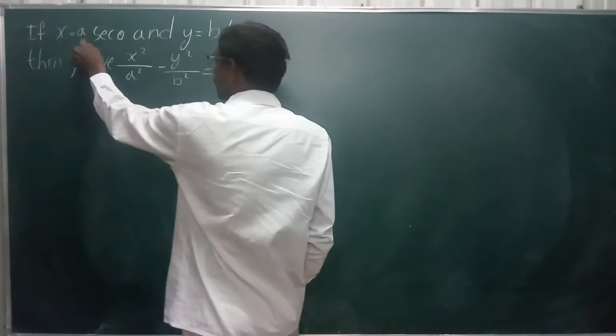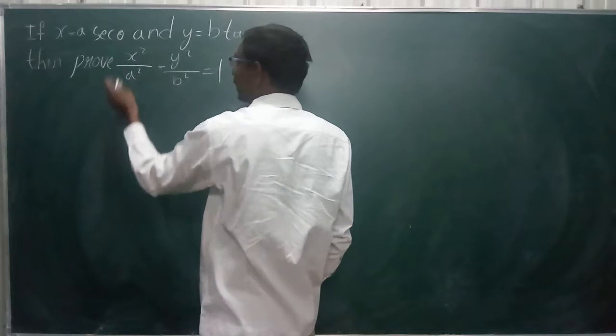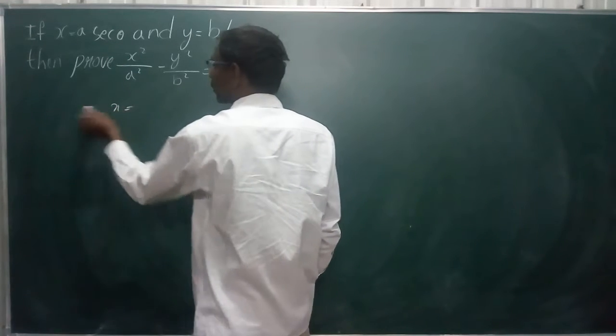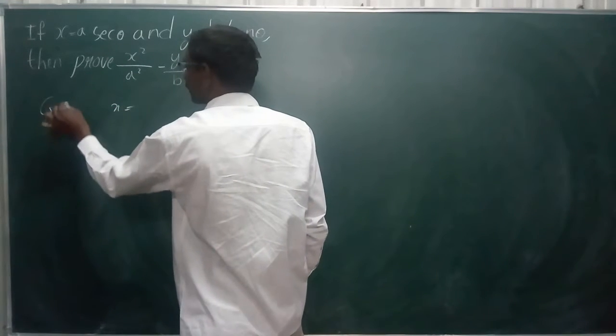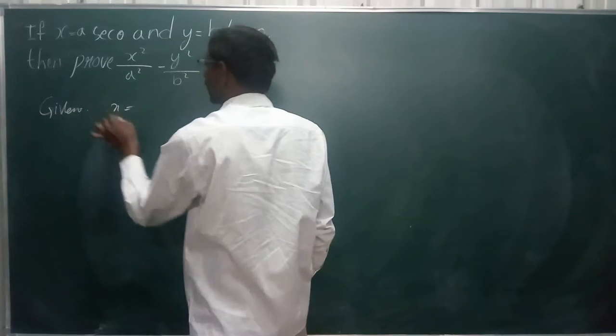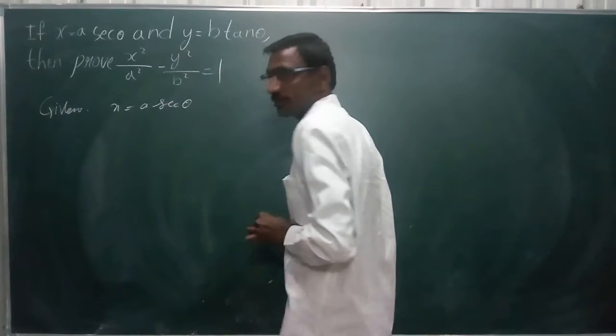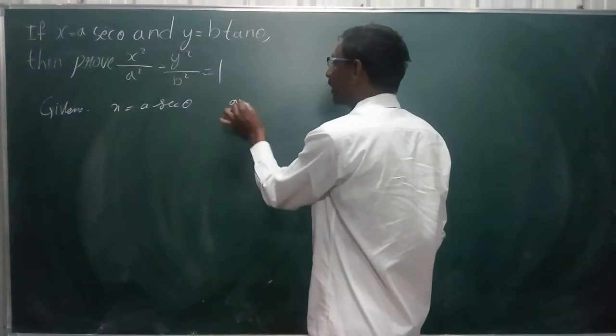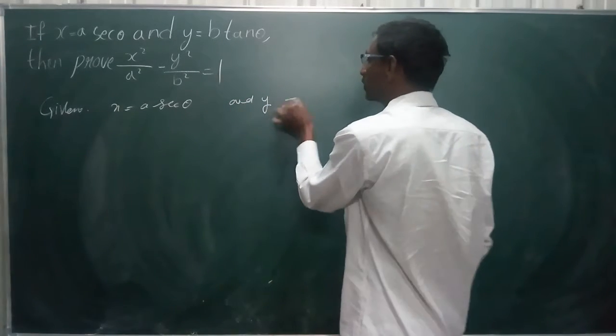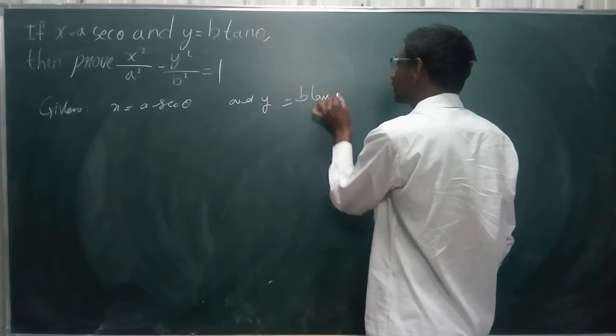Here given these two equations. You should write given. x is equal to a sec theta and y is equal to b tan theta.